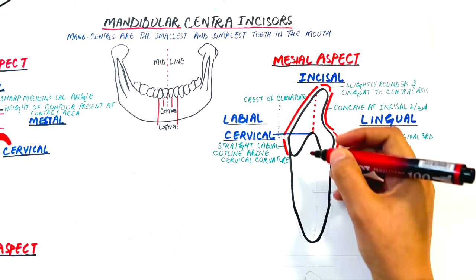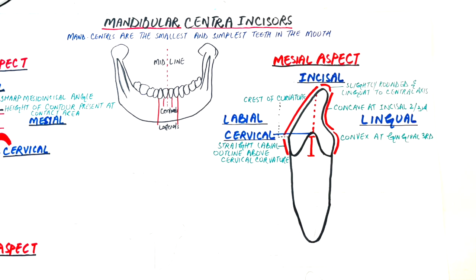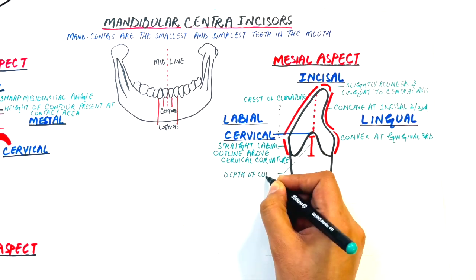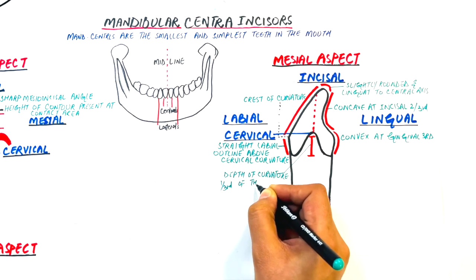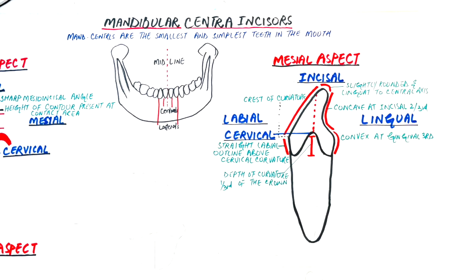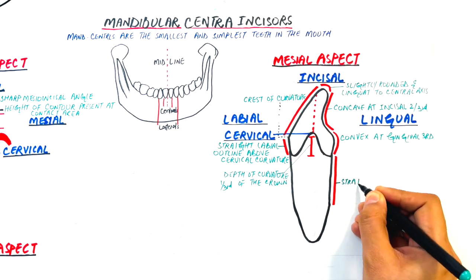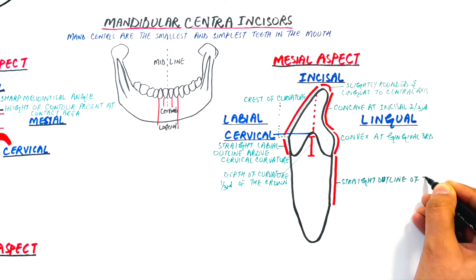The cervical outline curves incisally, and the depth of curvature is approximately one-third of the length of the root. The mesial surface of the root is flat with its outlines almost straight at the cervical and up to some extent of the middle third.